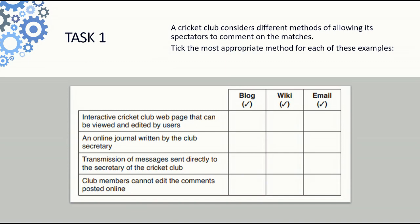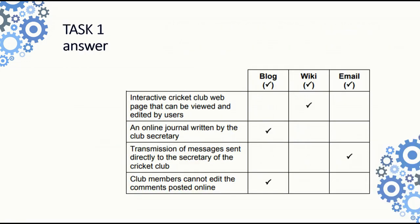Our task one for today is the following past paper question. A cricket club is considering different methods of allowing its spectators to comment on matches. For each point, we have to select whether a blog, a wiki or an email is the best method. The first one is an interactive cricket club web page that needs to be viewed and edited by users. Since only a wiki can allow multiple users to edit the same page, the answer is wiki.